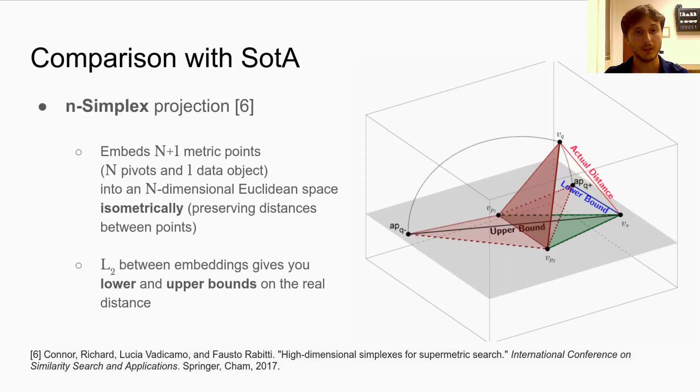This is a geometric method that embeds n plus 1 metric points and pivots in one data object into an n-dimensional Euclidean space isometrically. So computing the L2 distances between the embeddings of two data objects provides lower bounds and upper bounds of the actual distance between the object in the original metric space, given that we keep the n-pivots fixed. The upper and lower bounds tend to improve as more pivots are used until the bounds eventually converge to the actual distance value.